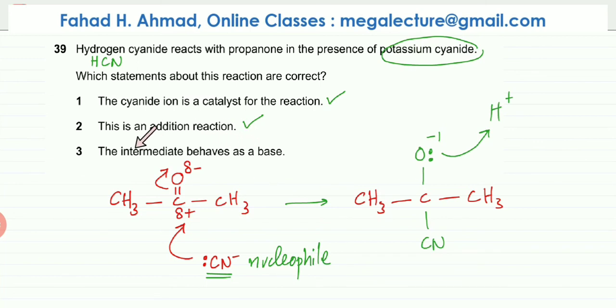The next one is that the intermediate behaves as a base. What does a base do? It accepts H plus 1 ions. That is the definition of a base. As you can see, the intermediate, which is this negative ion, is actually gaining H plus 1 ions. So it is behaving as a base.